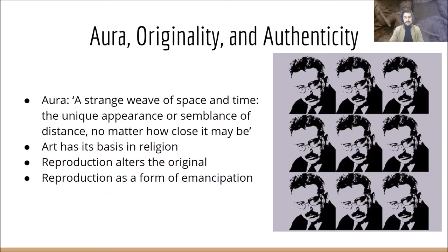To quote Benjamin: 'As soon as the social function of authenticity ceases to be applied to artistic production, the whole social function of art is revolutionized. Instead of being founded on ritual, it is based on a different practice — politics.' Benjamin considered reproduction to be, in a sense, a liberation of art — the creation of a new original with new functions to be performed. John Berger, in Ways of Seeing, would put it this way: 'The meaning of a painting has become transmittable. It has become information of a sort — messages, pieces of information to be used.'